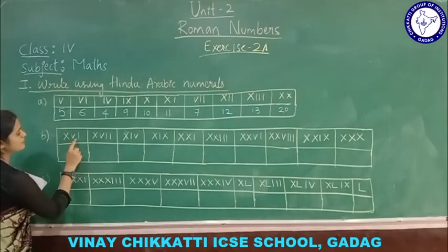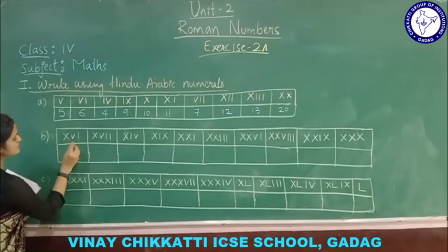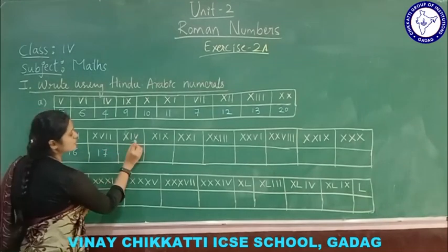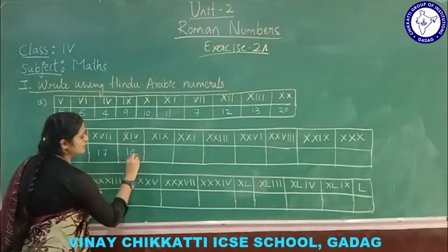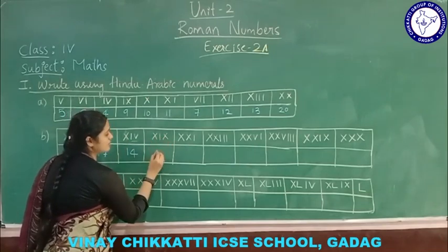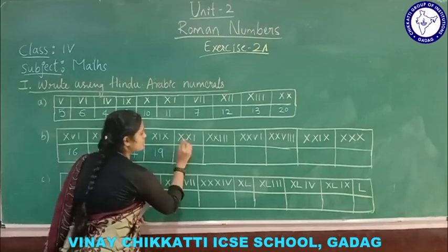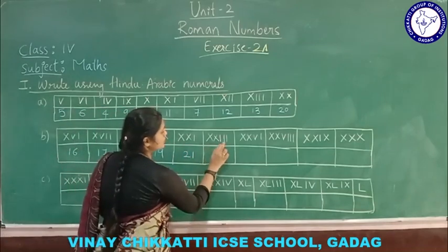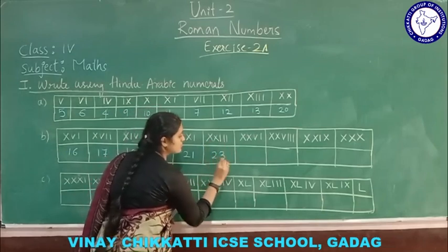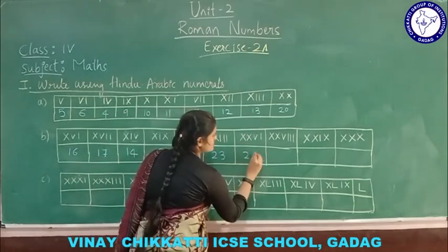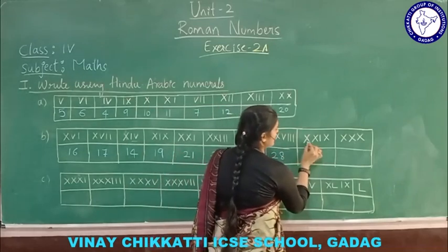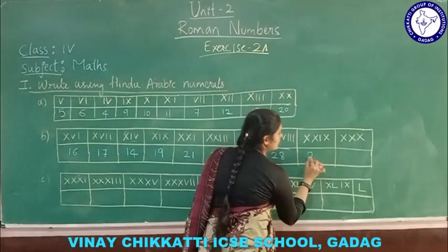X V I means 10 plus 5 plus 1 equals 16. X V I I is 17. I V is 5 minus 1 equals 4. X I V means 14. X I X means 10 minus 1 plus 10 — that gives 19. X X I is 21. X X means 20. X X I I I means 23. X X V I is 26. X X V I I I is 28. X X I X means 10 plus 10 minus 1 equals 29.